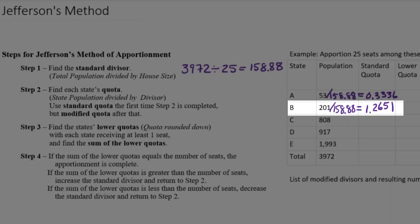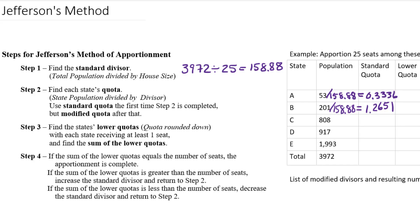And State B deserves a little more than one representative, like one and a quarter. Unfortunately, we know we can't split representatives up into pieces. The various apportionment methods give us ways to deal with those fractions.